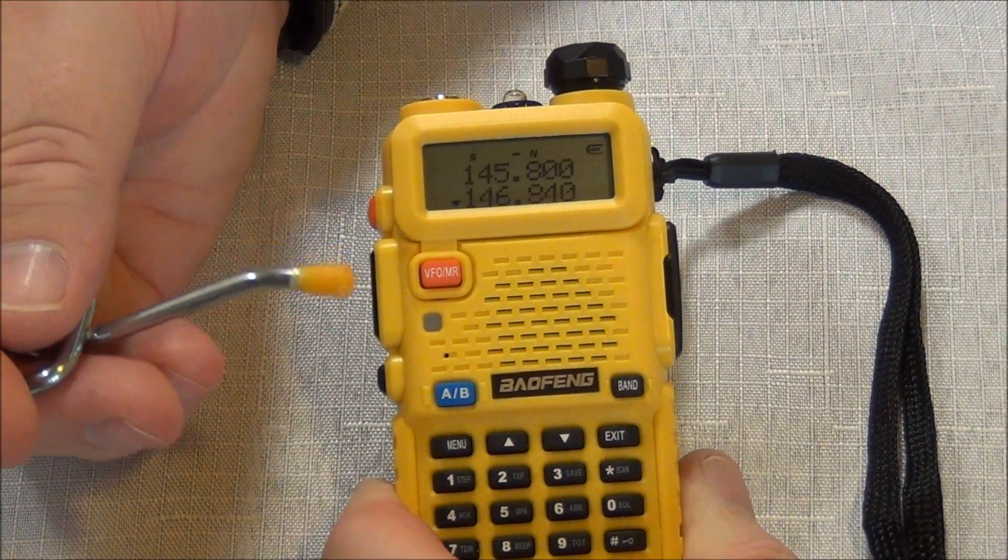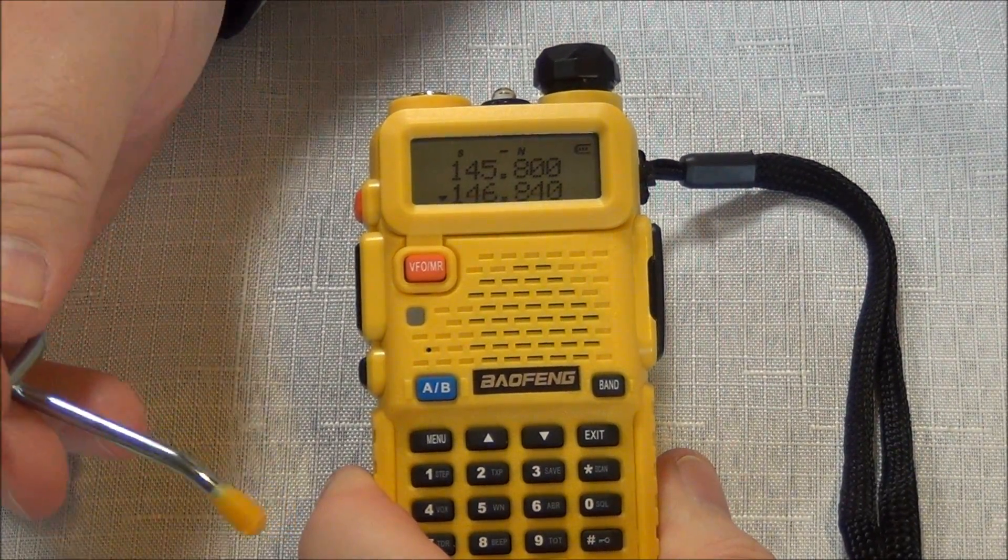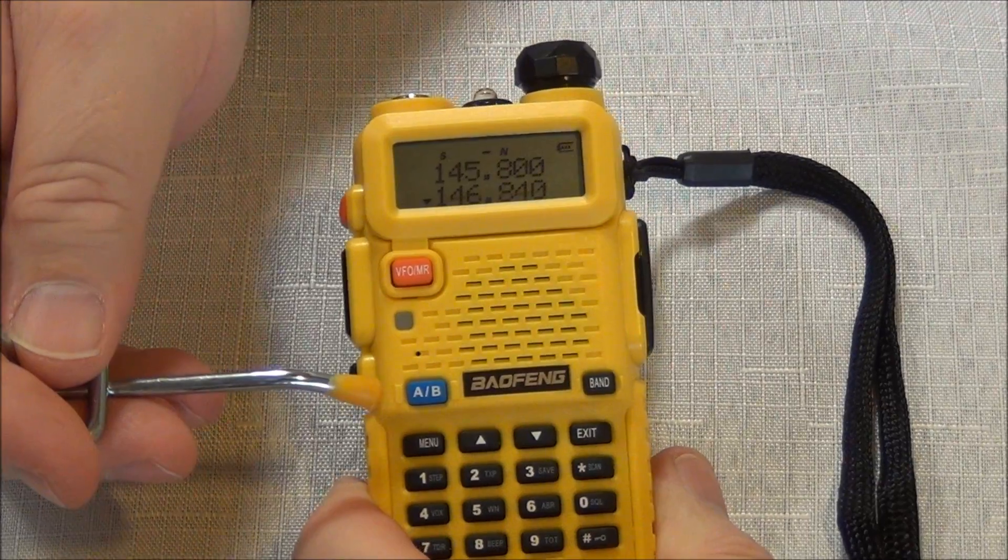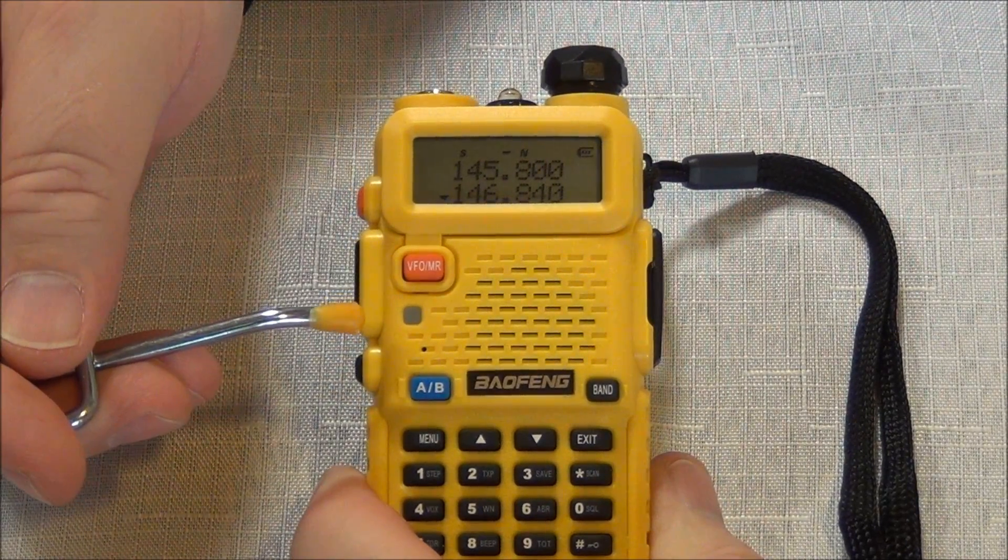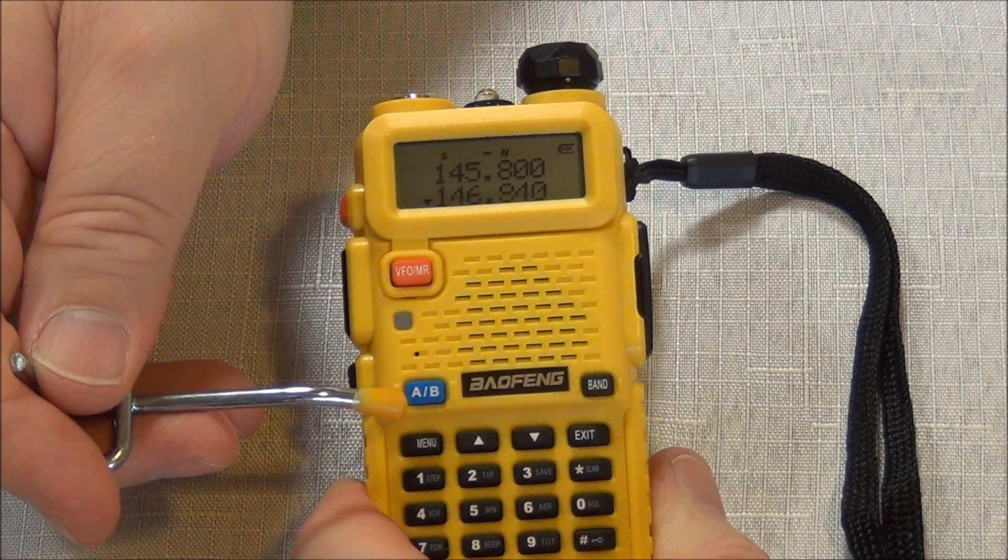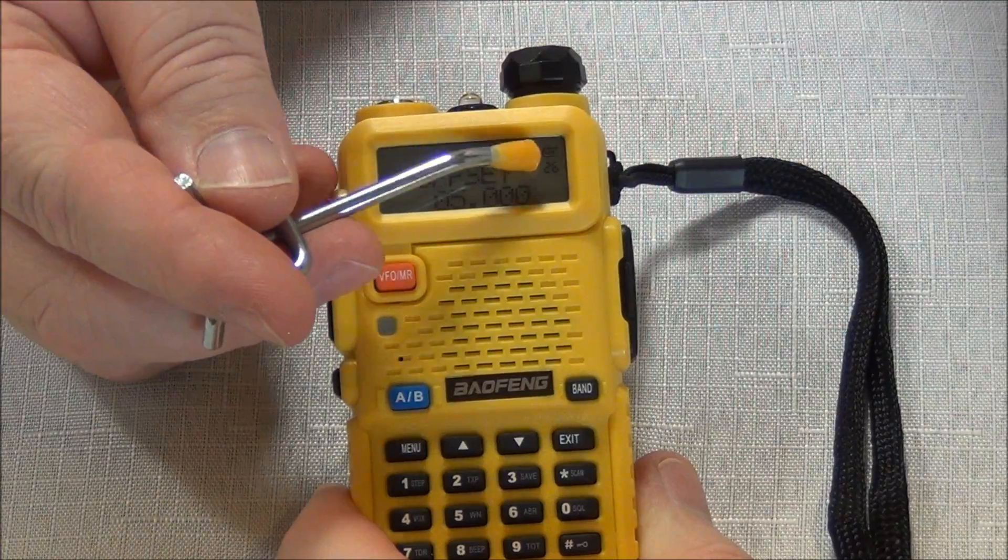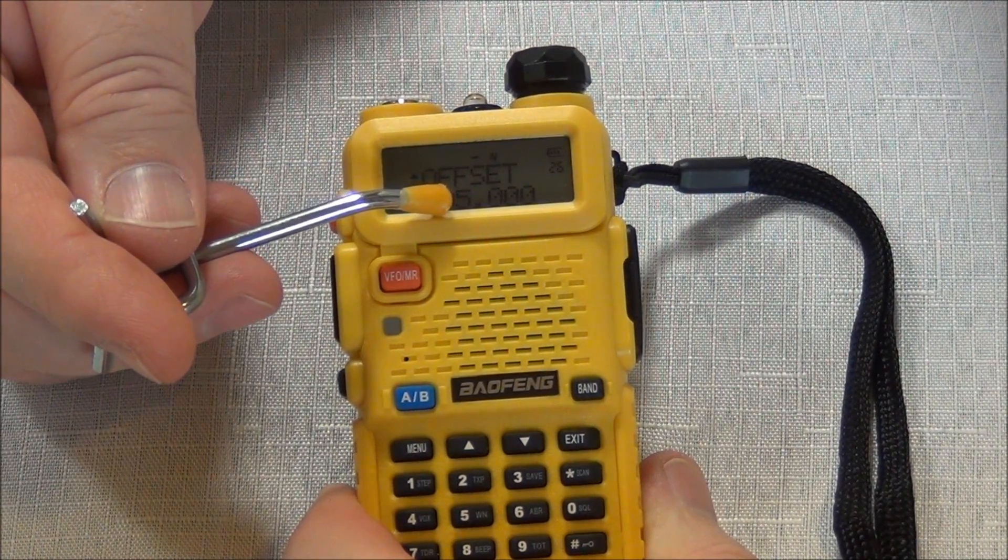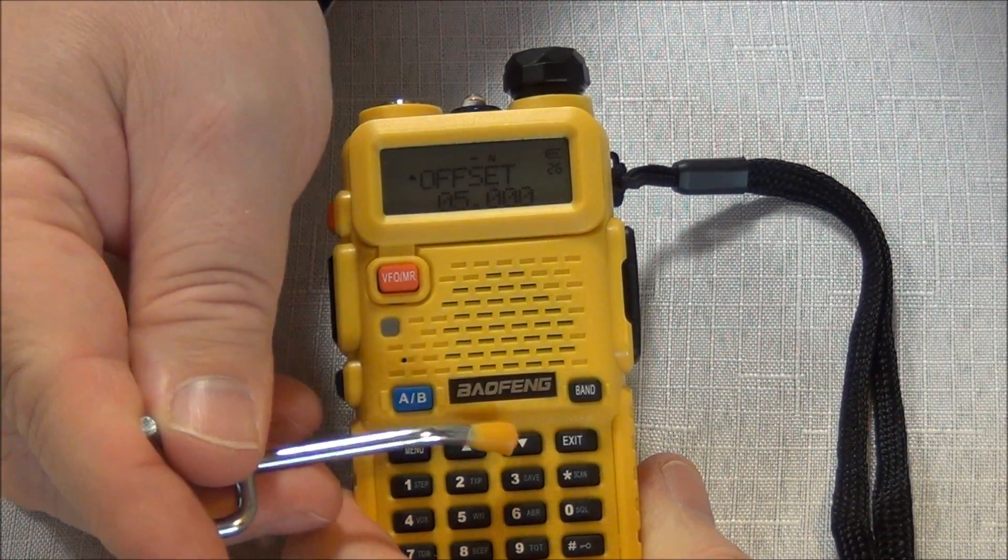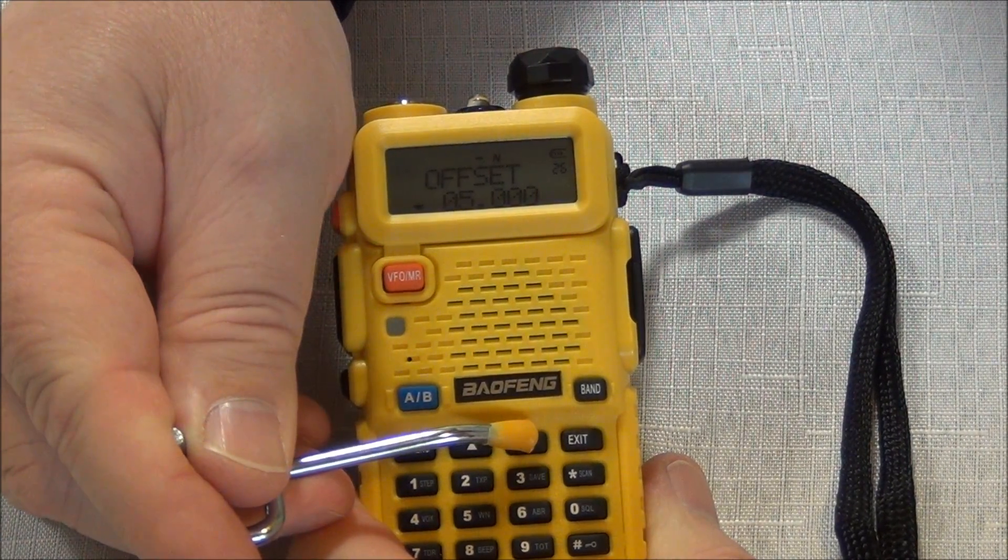The next thing I have to do is the offset. That is how many megahertz difference between the transmit and the receive frequency is. We already know we're going negative for transmit. And this particular repeater uses the standard 0.6 offset. And that is going to be on option 26. So we go to menu and up just one. And you can see it is 26. And this is at five kilohertz. So that is way too high. So we hit menu again. And we're going to go down.